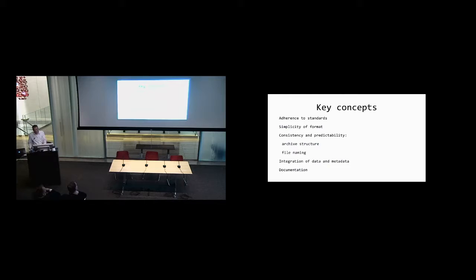The key concepts we employ in creating these data sets are: adherence to standards; simplicity of format — TIFF images, flat files; consistency and predictability so both people and machines can use these data sets; all files named in the same way, all structured identically; and an integration of metadata and data. In each image header is the description of what that image is using the Archimedes Palimpsest metadata standard. Each image is accompanied by an XMP sidecar file containing that same information, plus documentation that helps you understand the structure of the dataset and the bit structure of the files it contains.